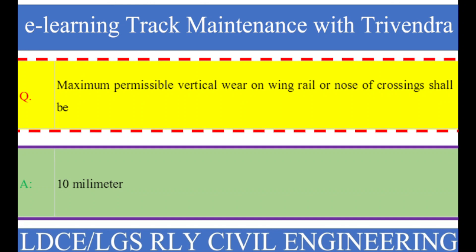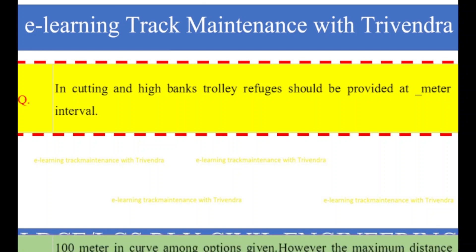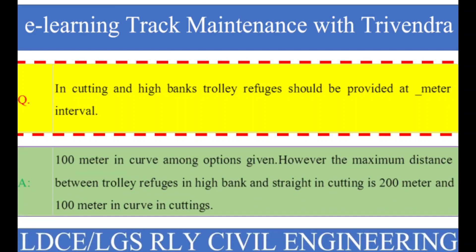Question number 59: In cuttings and high banks, trolley refuges should be provided at what meter interval? The right answer is 100 meters in curves. Among the options given, the maximum distance between trolley refuges in high banks and straight cuttings is 200 meters, and 100 meters in curves in cuttings.